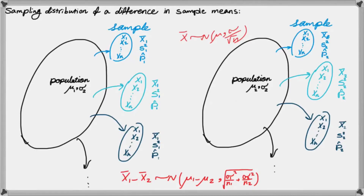Remember in the previous lesson we talked about the sampling distribution of the difference between the average mean of the two populations. We learned that for one population, the sample average follows a normal distribution with mean mu and standard deviation sigma over square root of n. The sampling distribution of the difference between the two population averages is also normal, with mean equal to mu one minus mu two and standard deviation equal to the square root of sigma squared one over n one plus sigma squared two over n two.